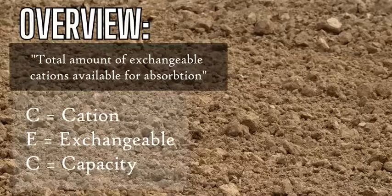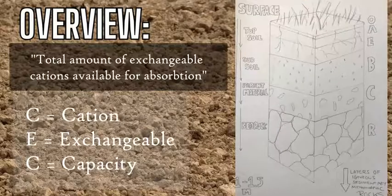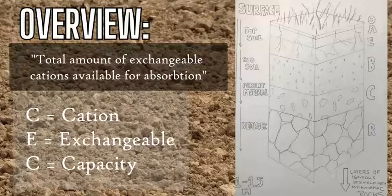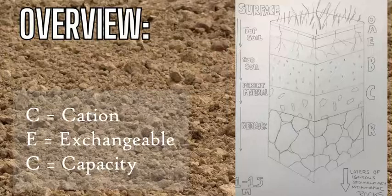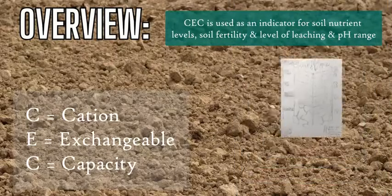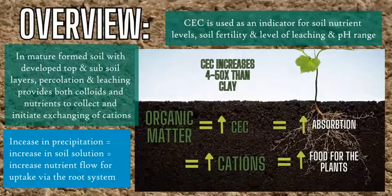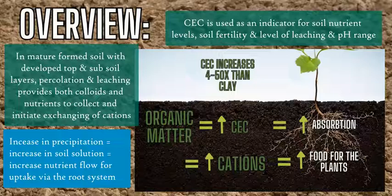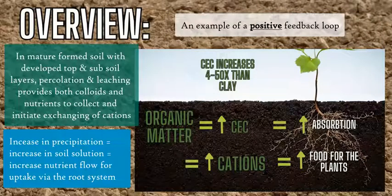As an overview: CEC, or Cation Exchange Capacity, is the total amount of cations available to exchange in the soil — in the B horizon with the colloids, with the soil solution, and with the roots. It is an indicator of plant health, soil health, and how fertile the soil can be. It is also a way to hold and maintain nutrients around the root for uptake and plant growth. Understanding CEC requires both the chemistry of the cations and the alkaline bases involved.